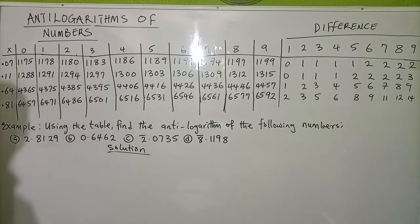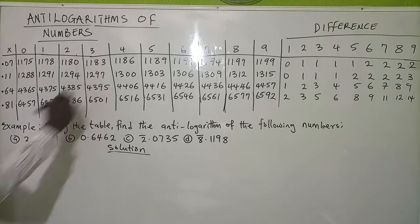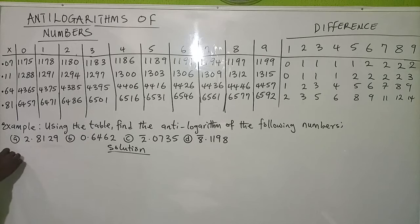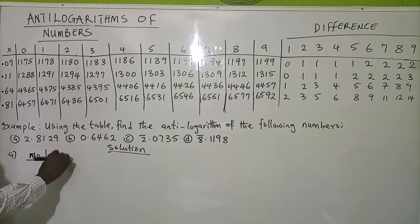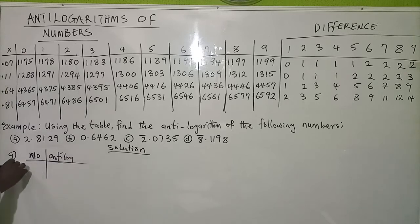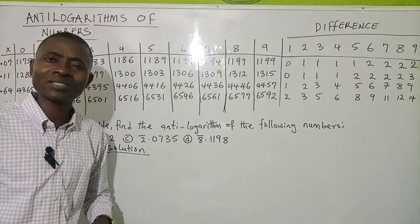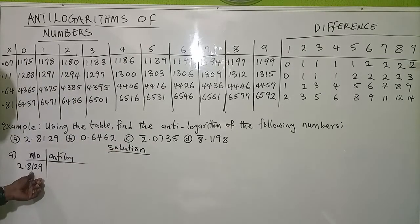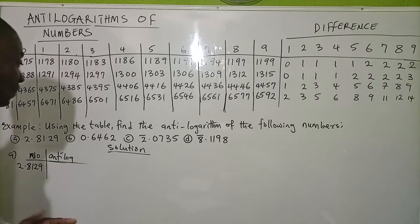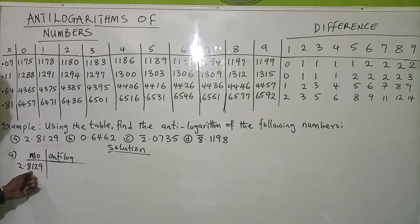Let's take the very first one. We have: find the antilog of 2.8129. When you are finding the antilog, where do we focus? We focus on the mantissa side — that is, the decimal part of the number. In this question, the decimal part is 0.8129.